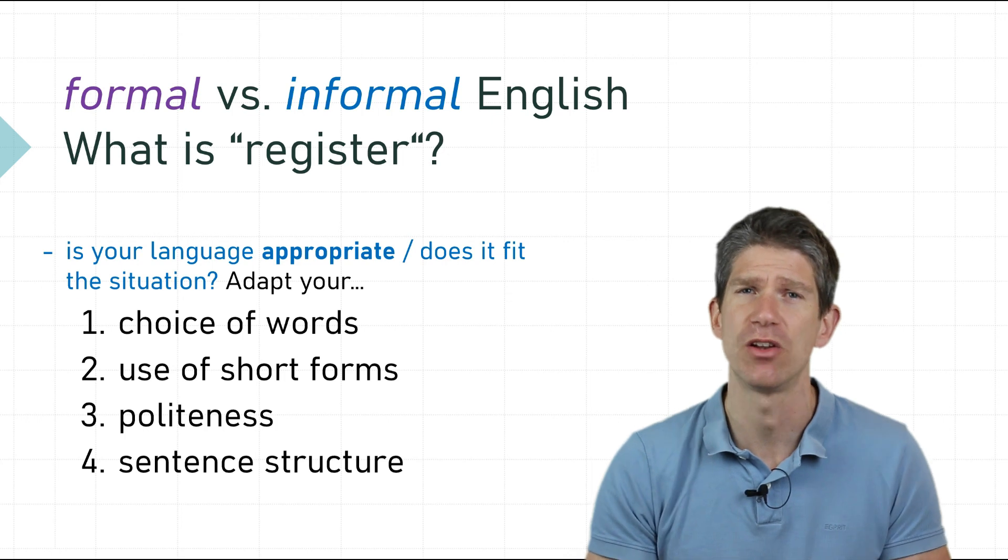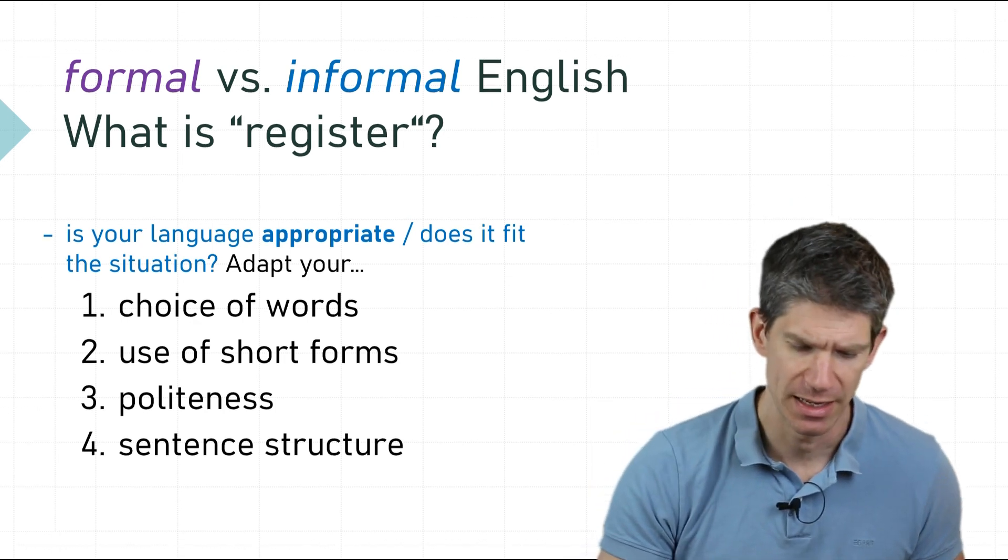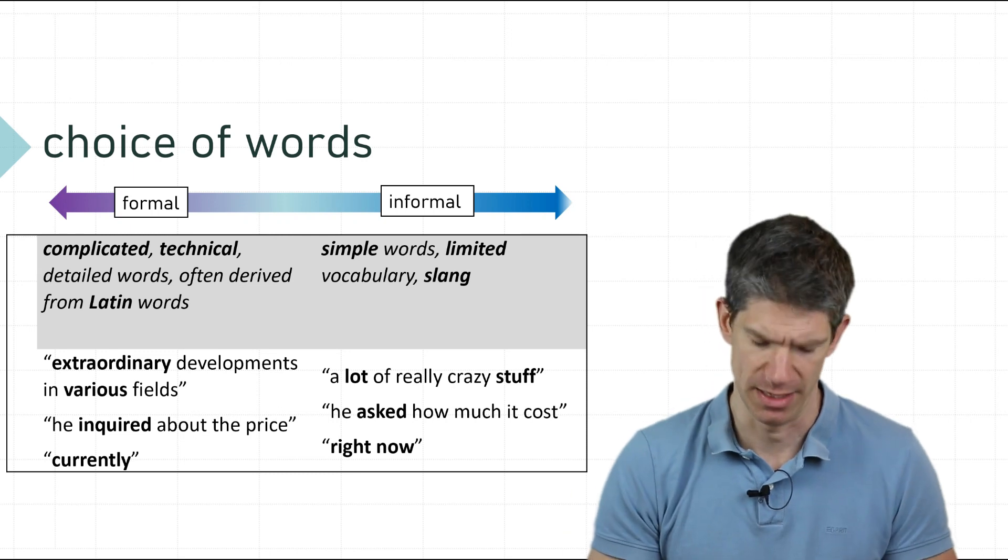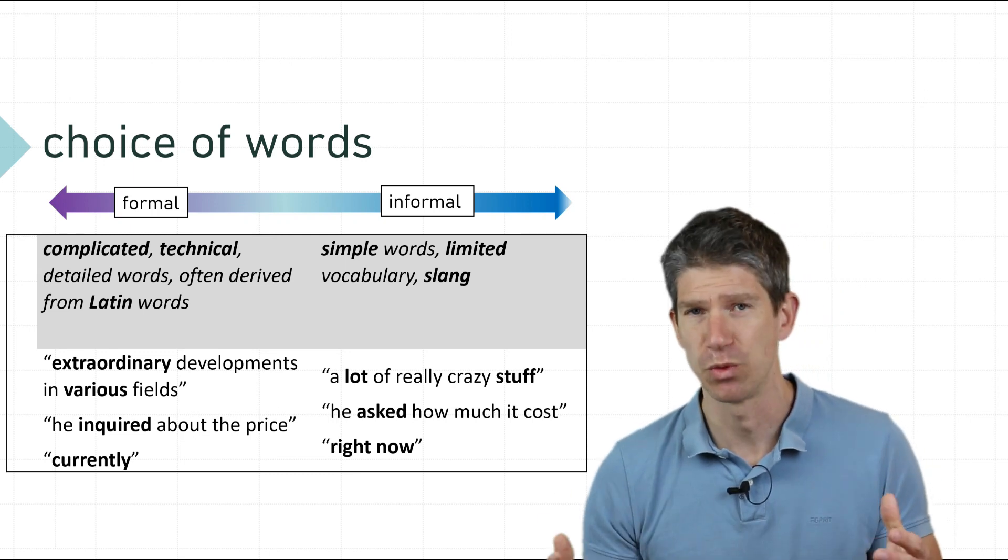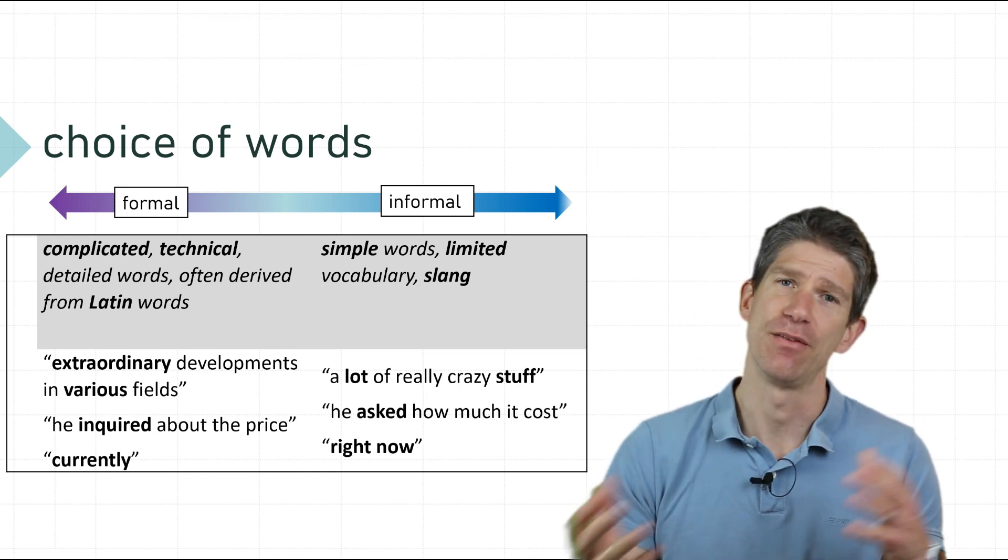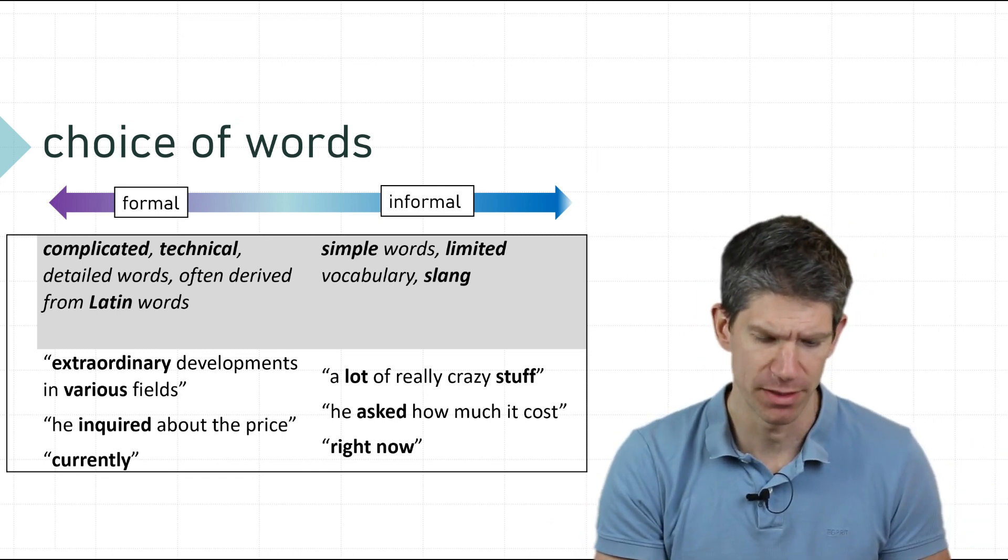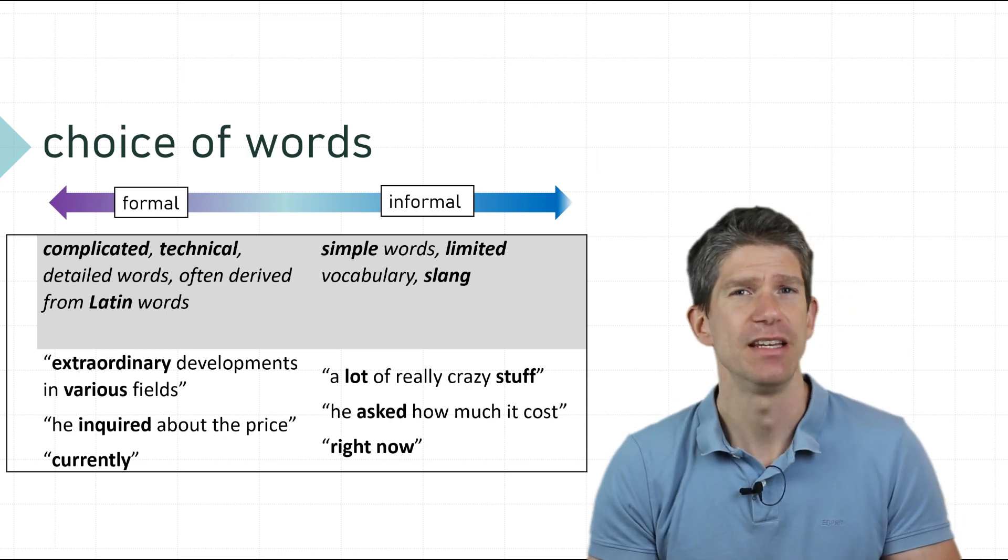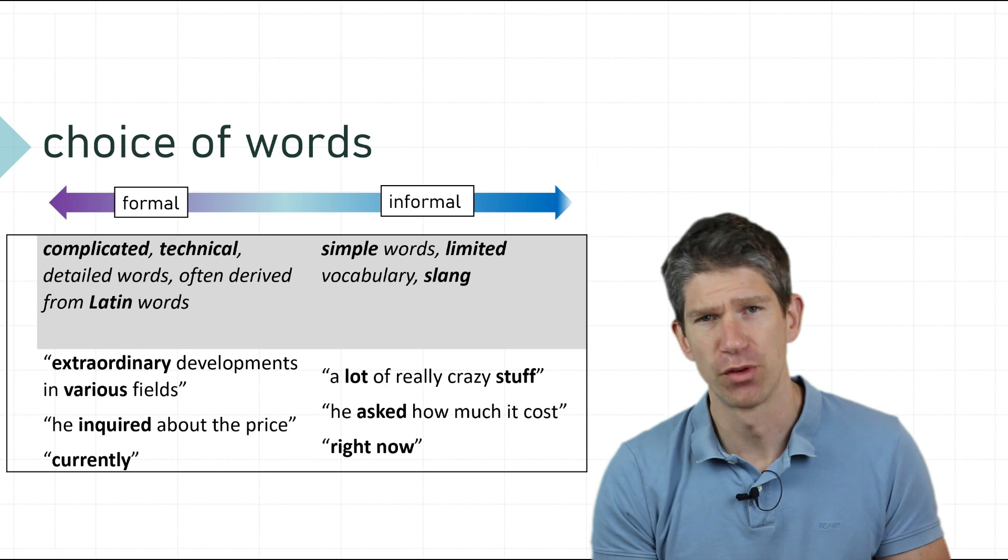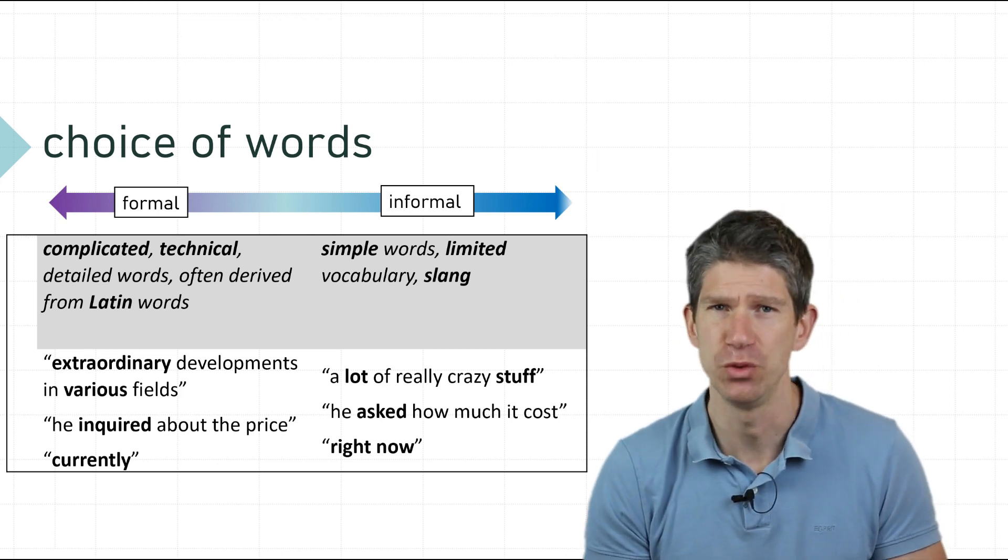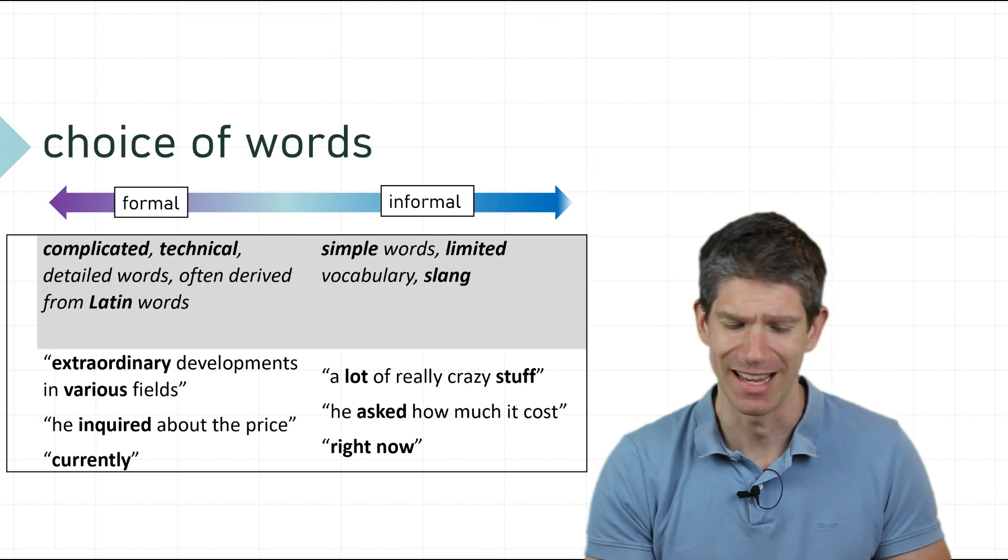Let's start with choice of words. Often in informal language we use simple words - we have a limited range of words that we use. In the more formal level, people often use more complicated or technical terms. In English, often the more formal the word is, the more likely it is to come from a Latin root. This applies to words like 'extraordinary' or 'various'.